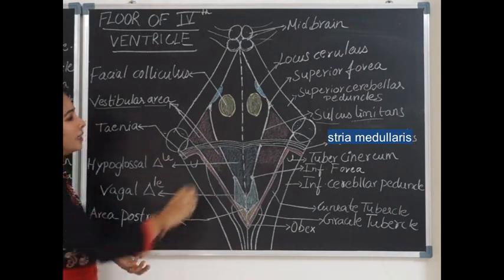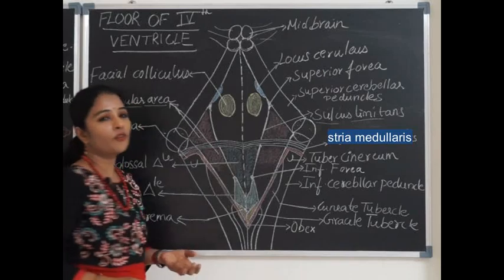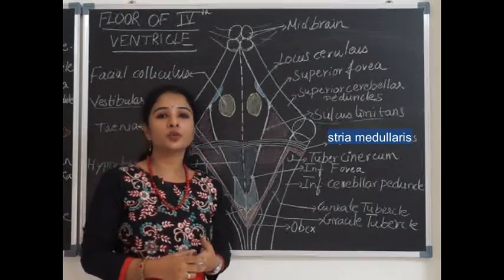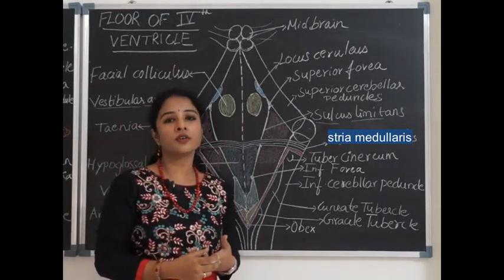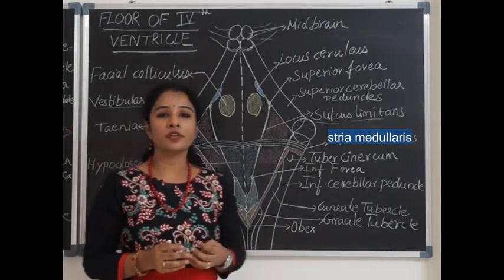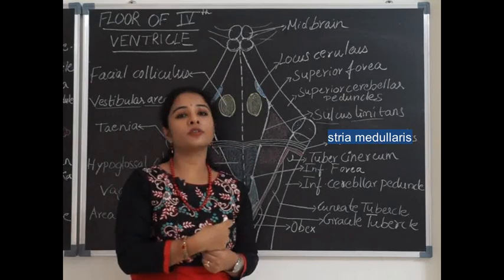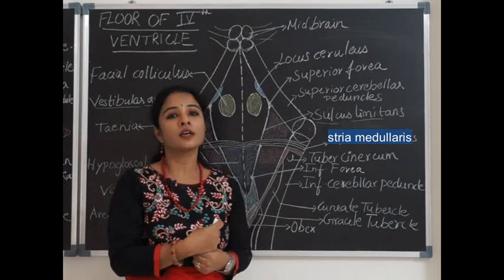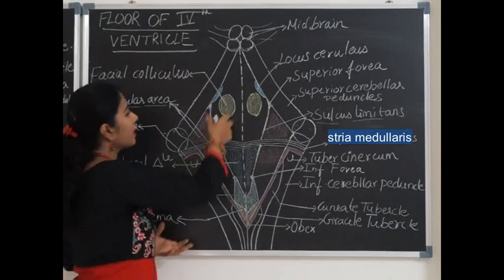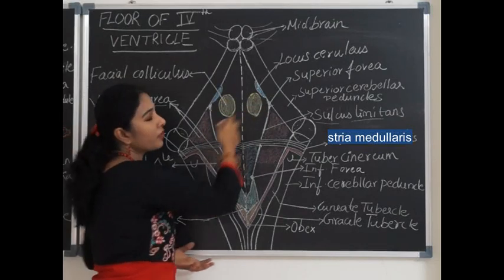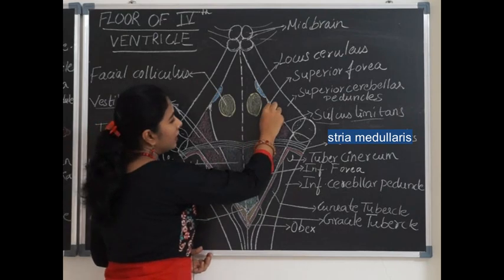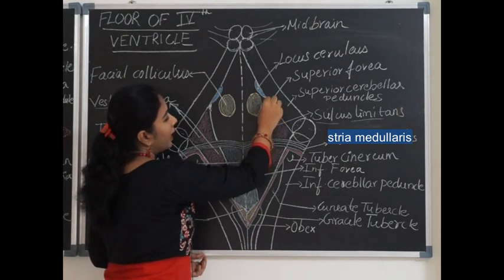Over the medial eminence there are two oval elevations in the upper posterior part of the pons called the facial colliculi. These are formed by the facial nerve, deep to which is the abducent nucleus (sixth cranial nerve nucleus). The motor fibers of the facial nerve wind around the abducent nucleus forming an internal genu, which presents as the elevated facial colliculus.